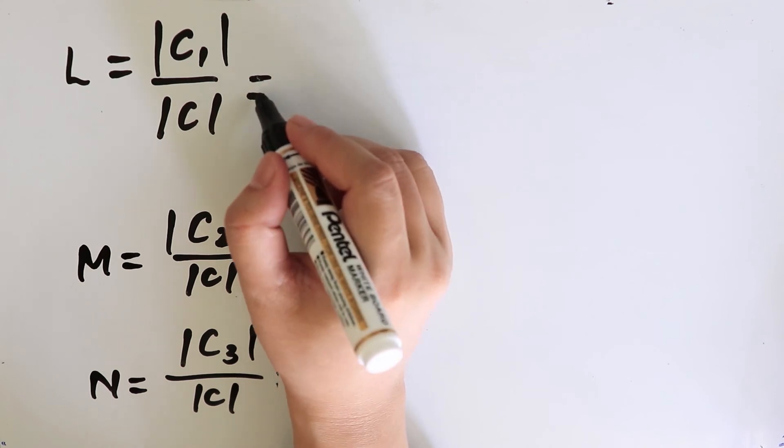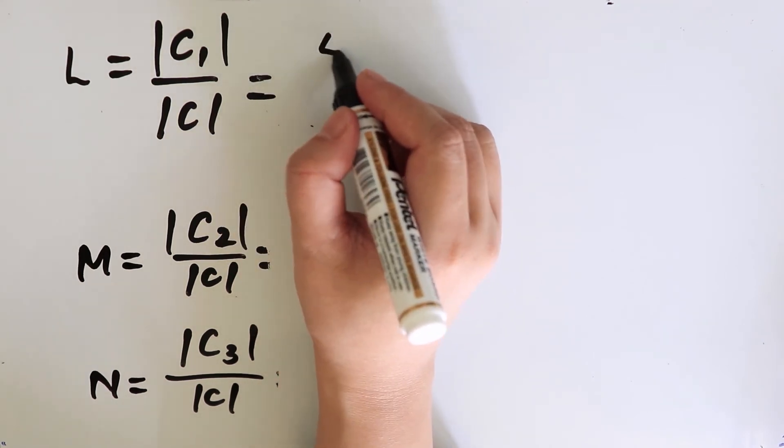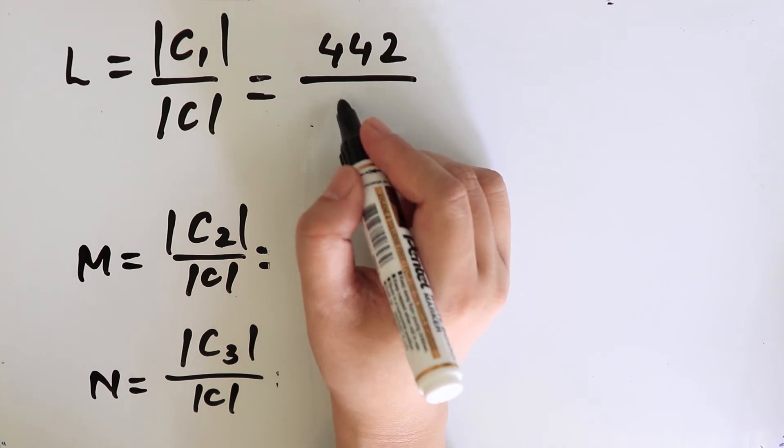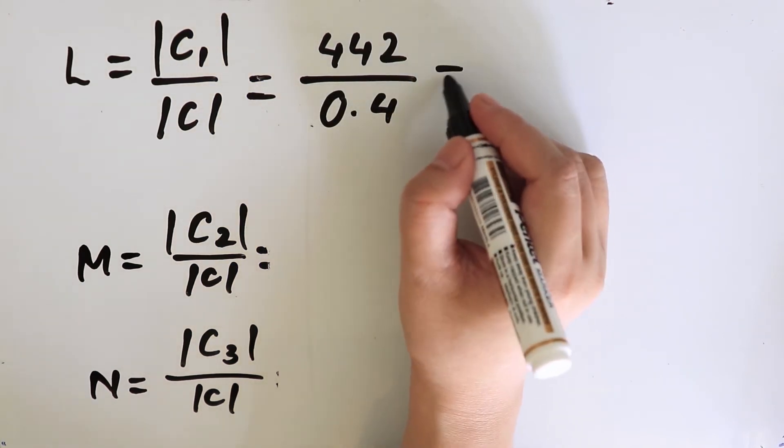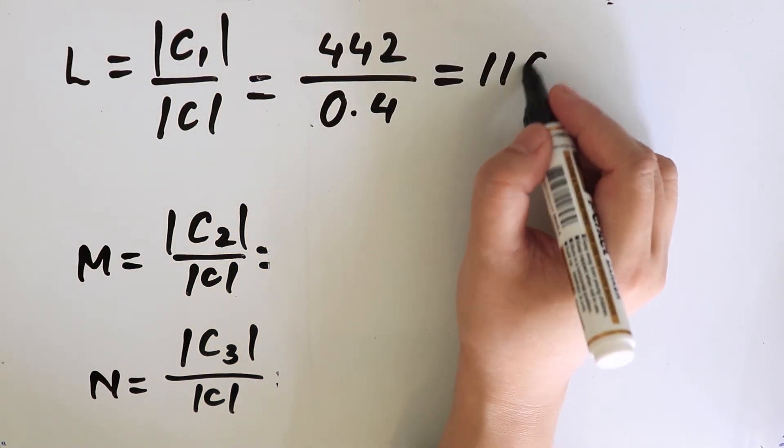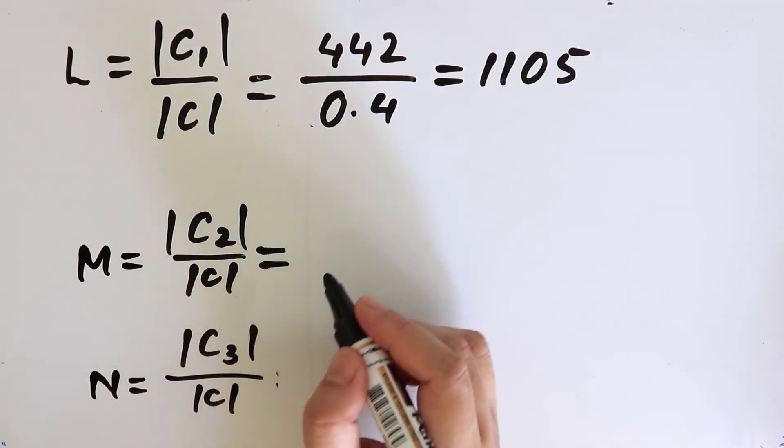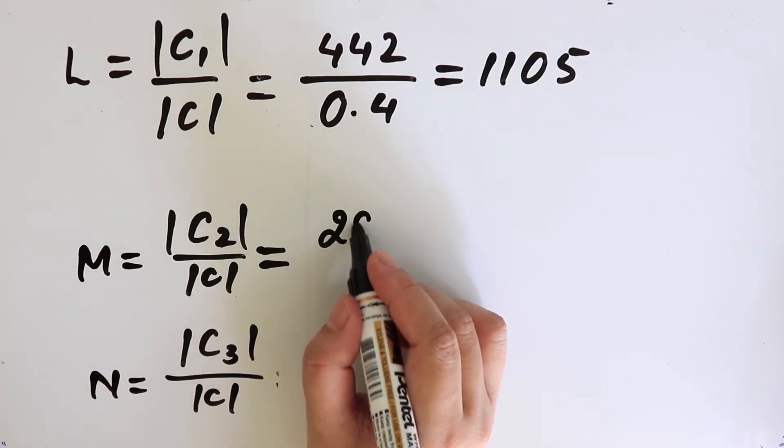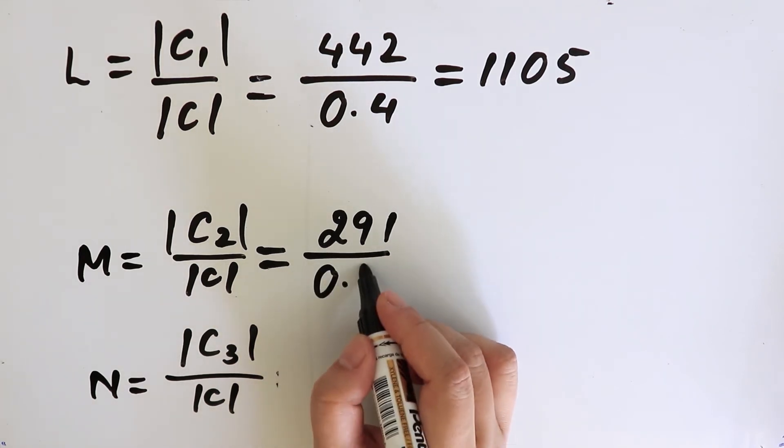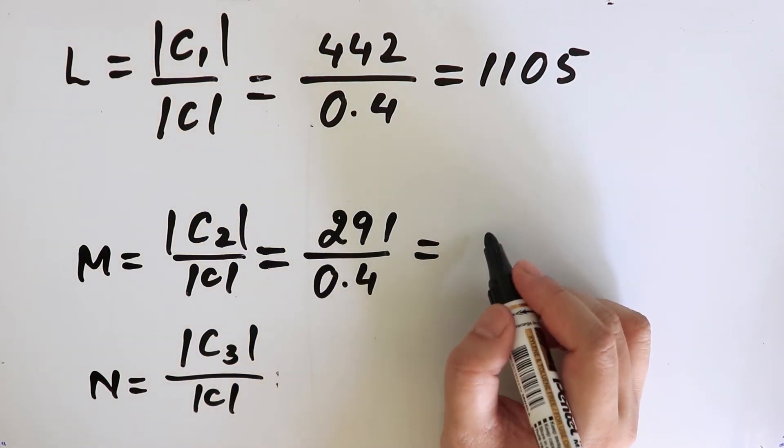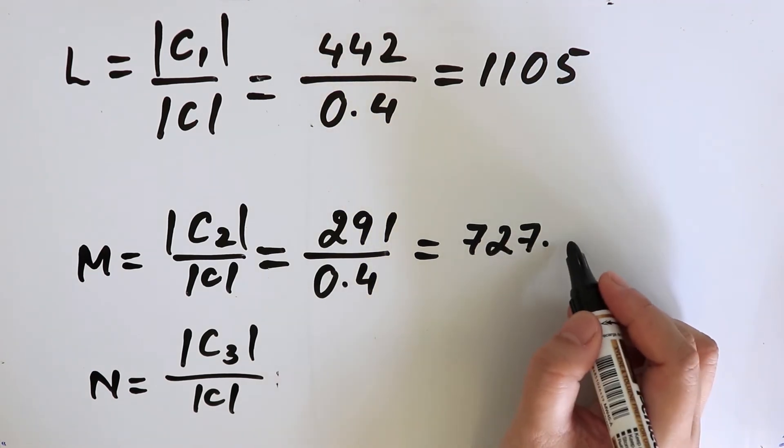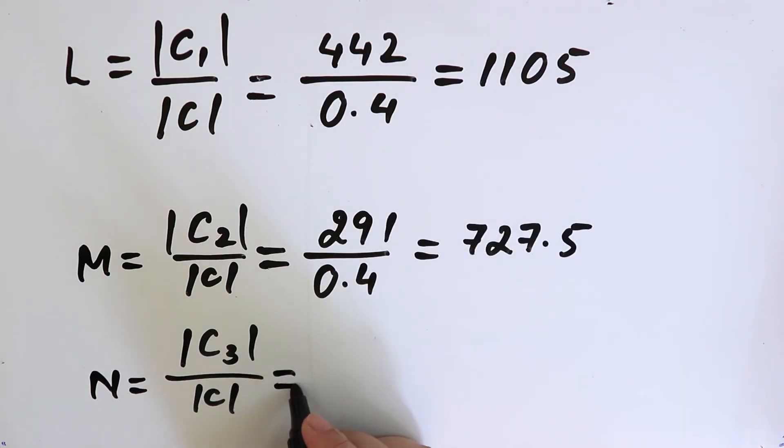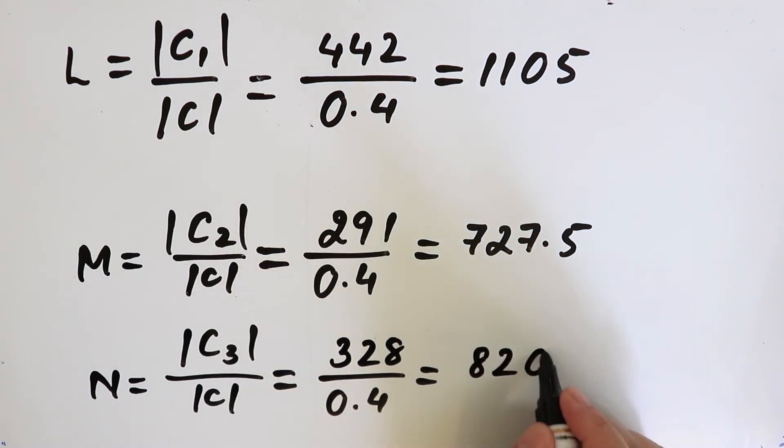After calculating, L will be equal to 442 divided by 0.4, and that is equal to 1,105. M will be equal to 291 divided by 0.4, and that is equal to 727.5. And N will be equal to 328 divided by 0.4, and that is equal to 820.